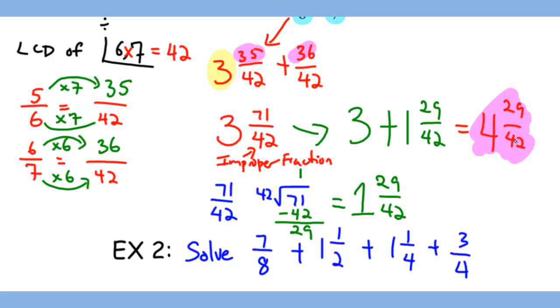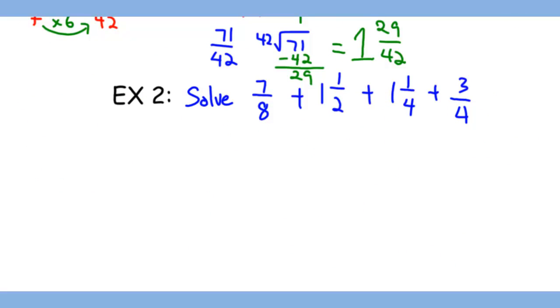Now let's try another example which in this case we have 4 numbers. The denominators are 8, 2, 4, and 4. Again we need to look for the LCD of the 4 numbers and let's write them side by side.